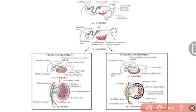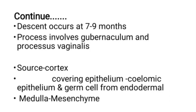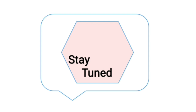Initially, the ovaries develop in the abdomen, then descent occurs at seven to nine months. This process involves the gubernaculum and processus vaginalis, after which the ovary becomes a pelvic organ. The cortex covering epithelium is from coelomic epithelium, germ cells are of endodermal origin from the yolk sac, and medulla is of mesenchymal origin.